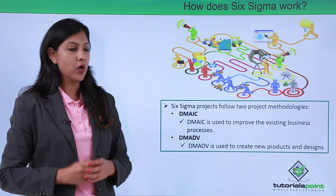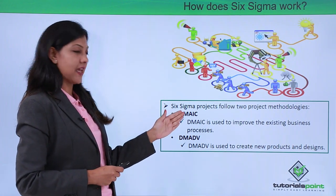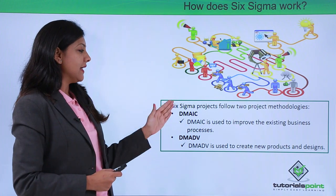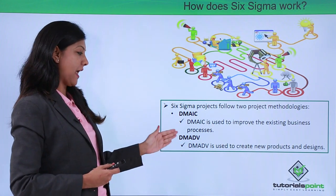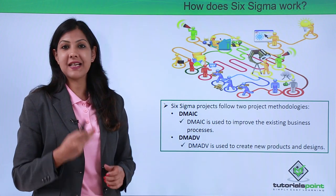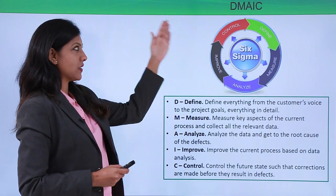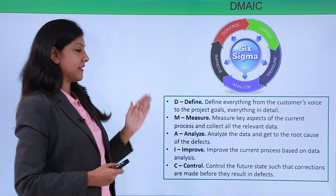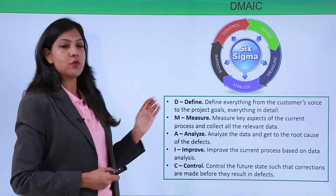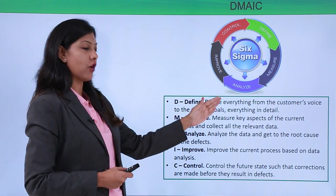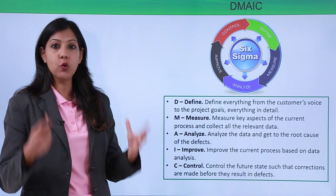Now let's understand how Six Sigma works. There are two main project methodologies used by Six Sigma experts. The first is DMAIC, which is used to improve existing business processes, and the second is DMADV, which is used to create new products and designs. Looking at DMAIC in detail: D stands for Define, M for Measure, A for Analyze, I for Improve, and C for Control. Define means you need to define everything from the customer's voice to the goals of your organization — everything listed down in detail about who you are and what you are about.